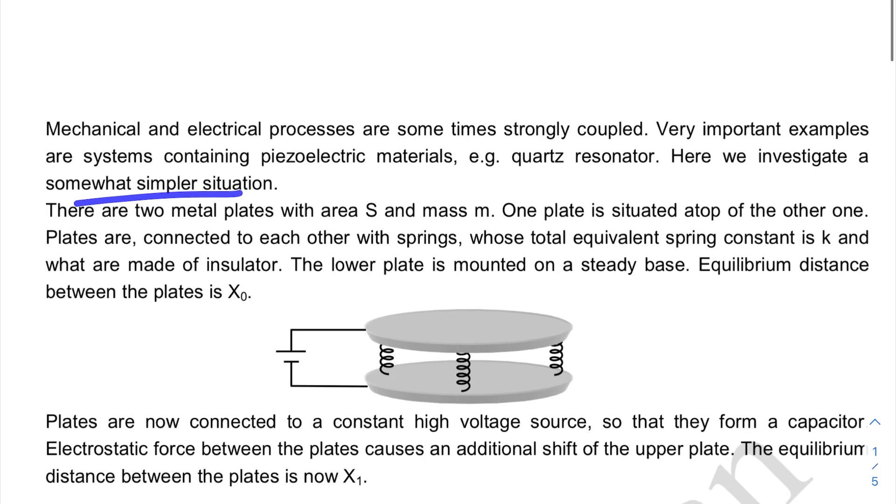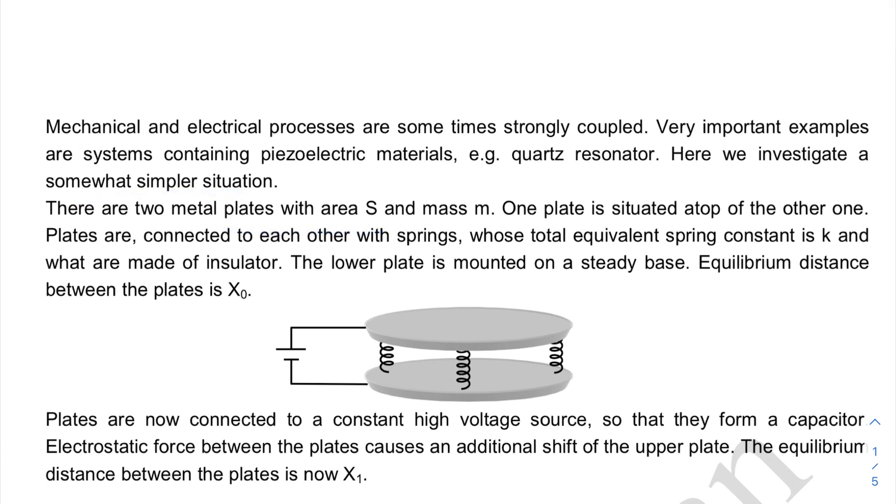There are two metal plates with area S. Instead of S, I'll be using A here. And mass m, one plate is situated atop of the other one as you can see in the figure. Plates are connected to each other with springs whose total equivalent spring constant is k and what are made of insulator. So springs are not conducting anything.